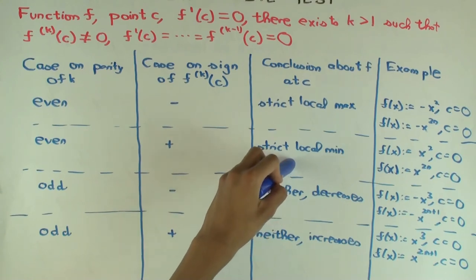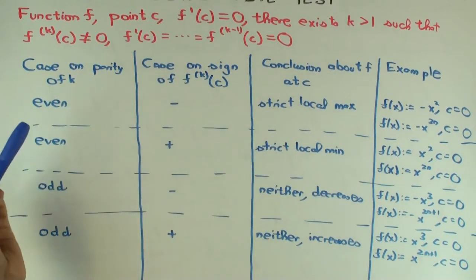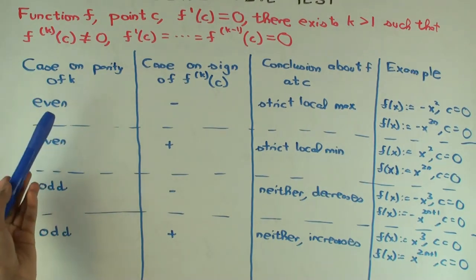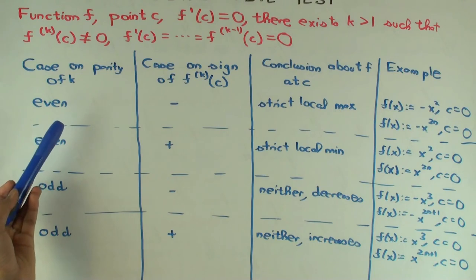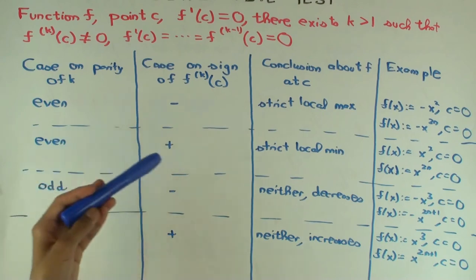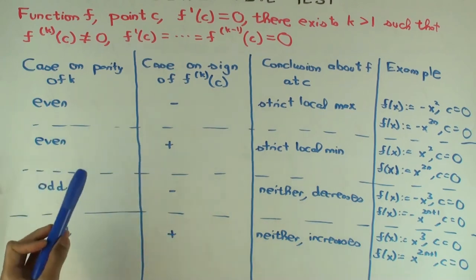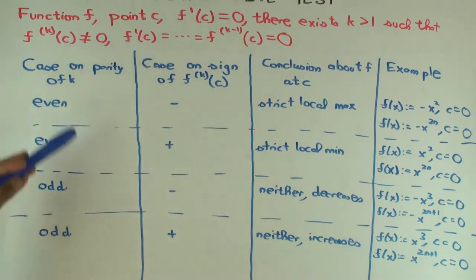Now, the usual second derivative test also says if the second derivative is zero, then we are inconclusive. But this one allows us to say, well, there's still hope. What's the hope if the second derivative is zero? You can go on differentiating. Go on differentiating and hope that at some point in the near future, you get a non-zero value derivative and then apply this.